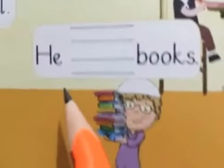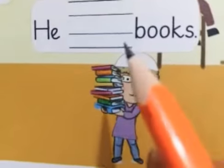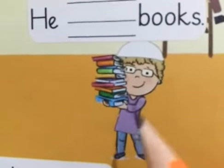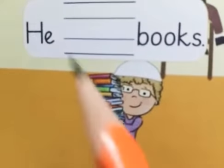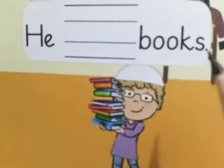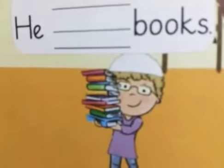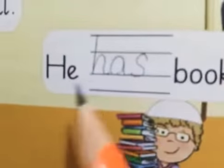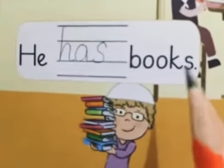This one is: He — books. He has books. So we will write has, like this: He has books.